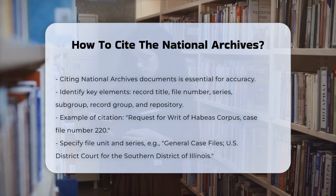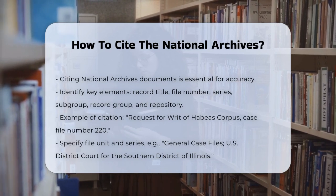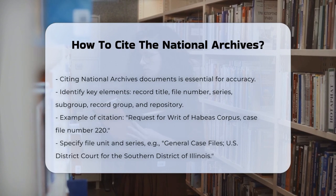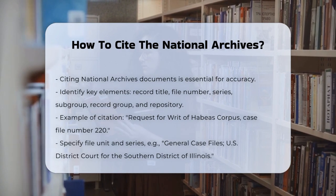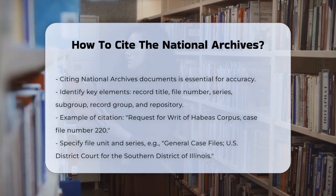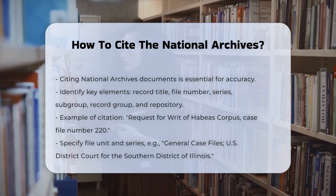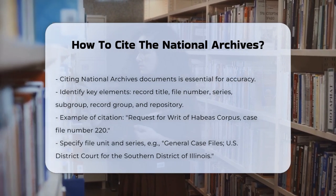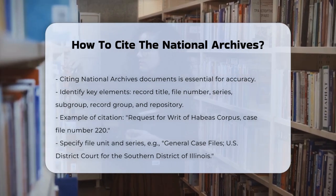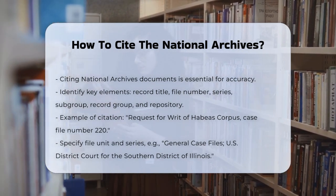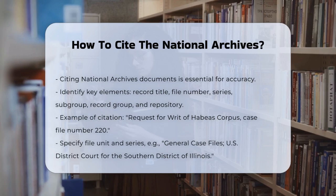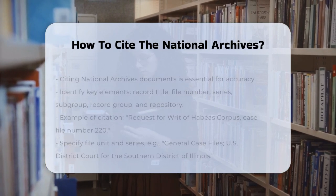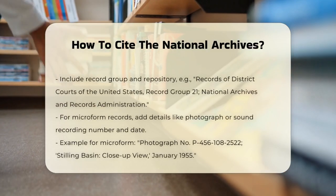For example, if you're citing a textual record, you might start with the record title and file number. Let's say you have a document titled 'Request for Writ of Habeas Corpus' with a case file number 220. You would then identify the file unit, such as general case files, and the series like U.S. District Court for the Southern District of Illinois, Southern Division, Springfield.